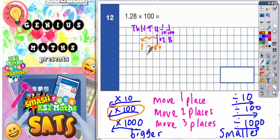So your final answer: the one moves two places to the hundreds column, the two moves two places into the tens column, and the eight moves two places to the units column. Final answer: one hundred and twenty-eight.